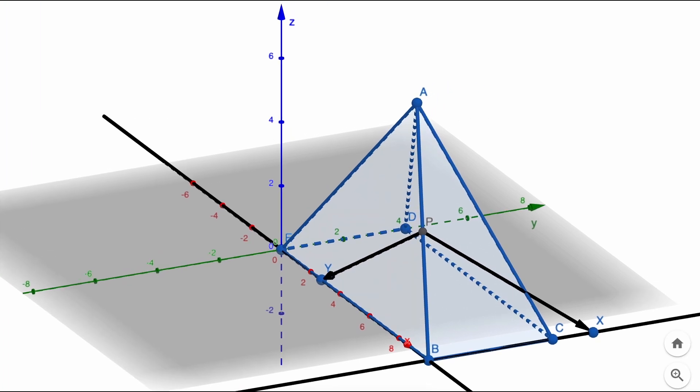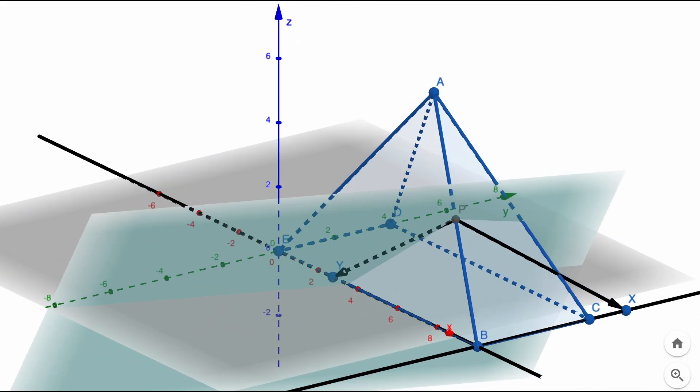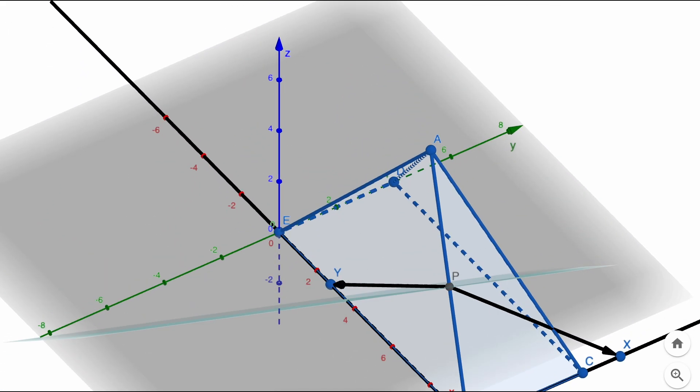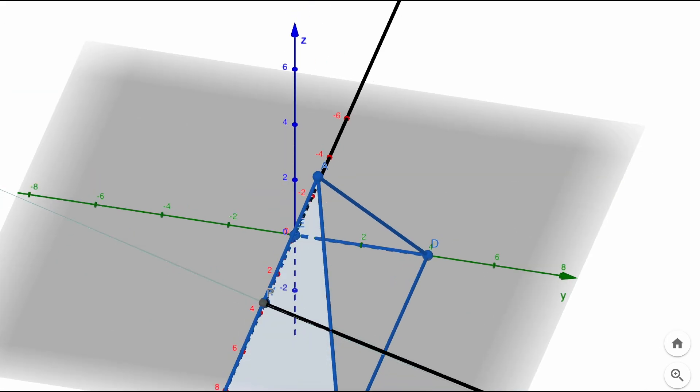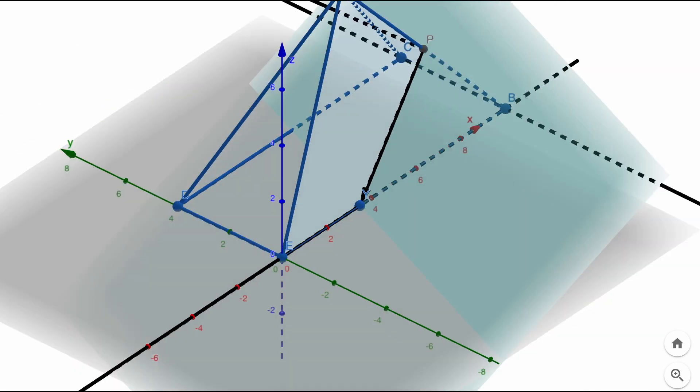For example, to find our orthogonal vectors, we could slice the pyramid with a plane through point P that is orthogonal to line AB. Then we could find where the plane intersects another line in the plane defined by the adjacent faces of the pyramid.